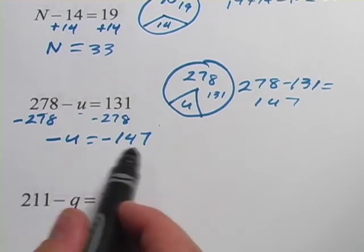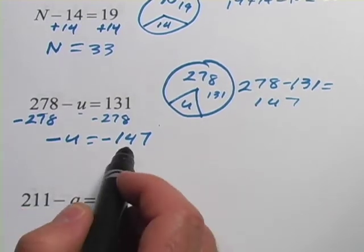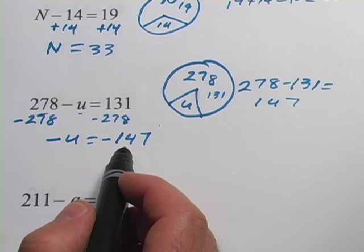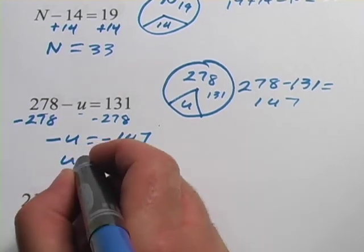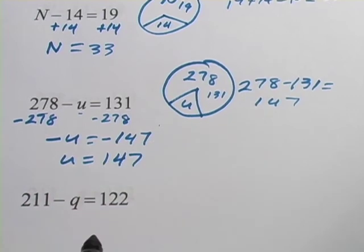Now here's where it's kind of weird looking, kind of tricky. We have negative u equals negative 147. Well that's the same thing as positive u equaling positive 147.